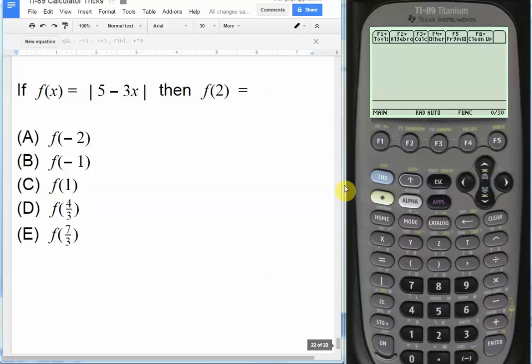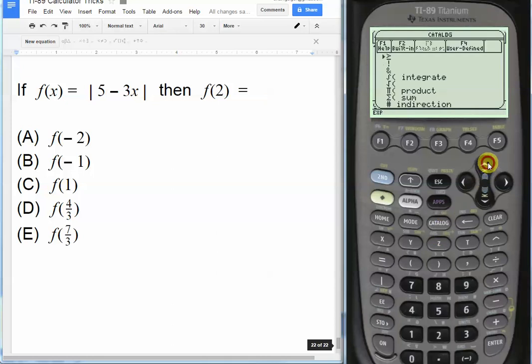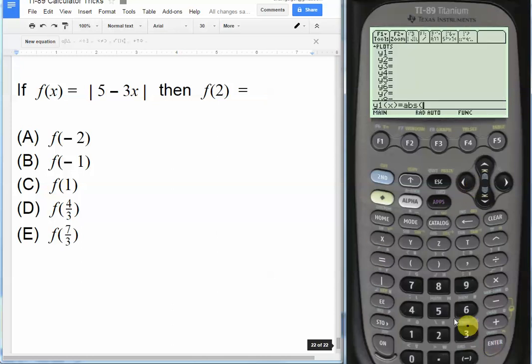So let's solve for f of 2 first. Let's put in our y equals here and put in the function absolute value of 5 minus 3x. So we can go to our catalog to find abs. It's one place to find it. Actually catalog, look under a's. abs is the first one actually. So we can push that and then 5 minus 3x. Close that parenthesis.